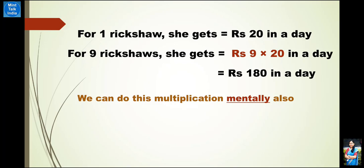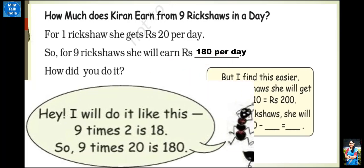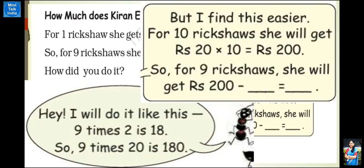इस तरीके से हम mentally भी इसको निकाल सकते हैं। तो एक दिन में 9 rickshas से Kiran will earn ₹180 per day. इस calculation को mentally करने के दो छोटे-छोटे methods हैं। पहला method: 9 को 20 से multiply करने में — 9 × 2 = 18, और side में 0 — बन गया 180। दूसरा method: 9 rickshas की जगह 10 rickshas का earning multiply करें, फिर 1 ricksha की earning को 200 में से minus करें।